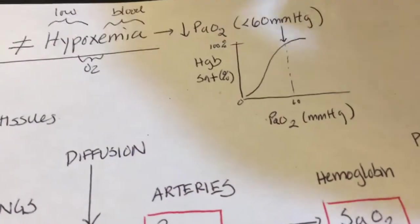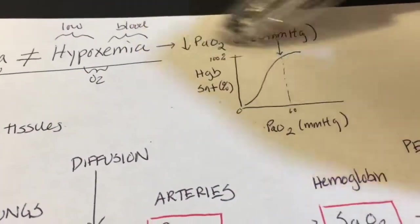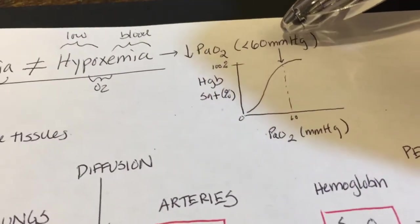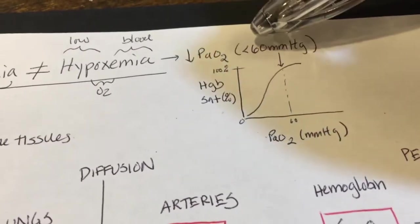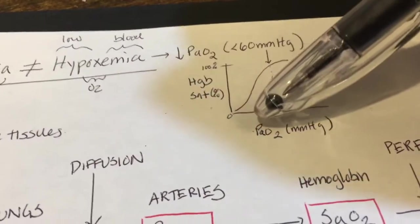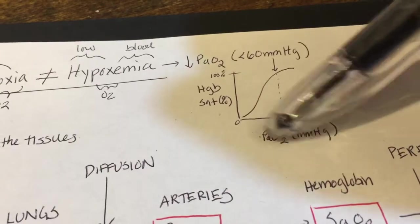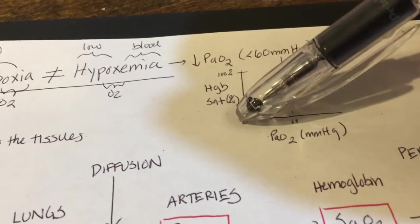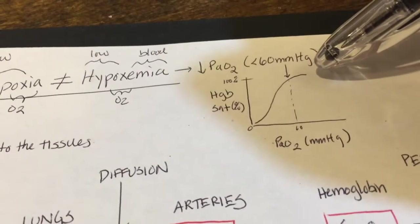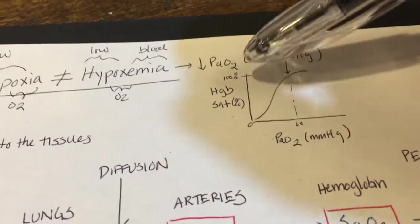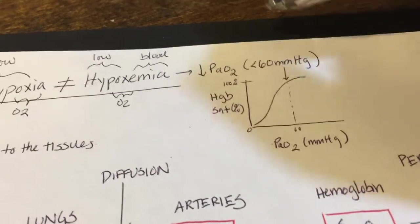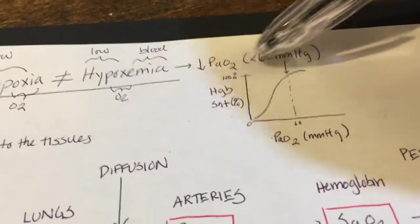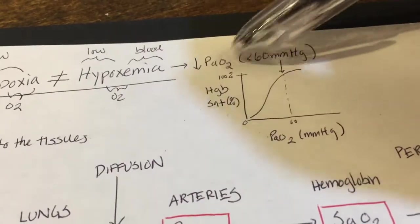Hypoxemia is defined as a low PaO2 — arterial partial pressure of oxygen — generally below 60 mmHg. The reason for this threshold comes from physiology: if you look at the graph between partial pressure of oxygen in the arteries and hemoglobin saturation, the body can compensate across a wide range — a large drop in partial pressure still maintains close to 100% saturation. However, once pressure falls below 60 mmHg, there is a much sharper drop in saturation.